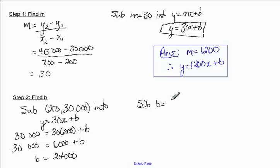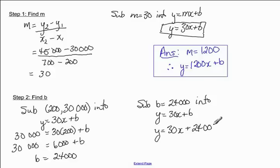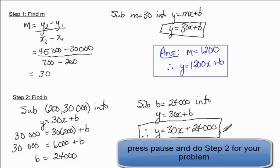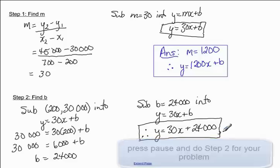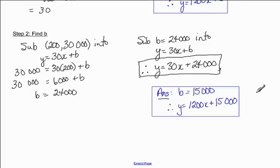And we get y is equal to 30x plus 24,000. Okay, and that is our linear model. So at this point, I would like you to go and try step two for your problem. Your answer is shown in the blue box.